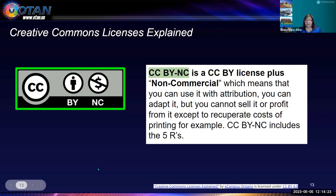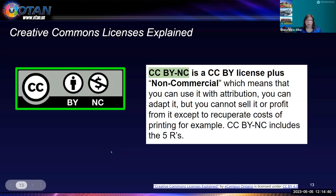CC BY-NC is a CC BY license plus Non-Commercial. This means you can use it with attribution, you can adapt it, but you cannot sell it for a profit — except to recuperate costs of printing, for example. CC BY-NC includes the five R's.